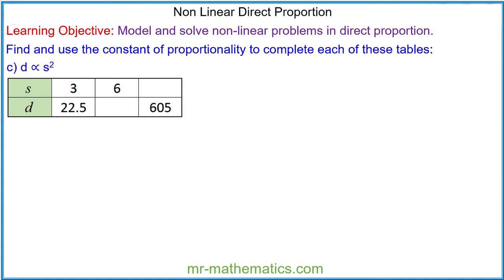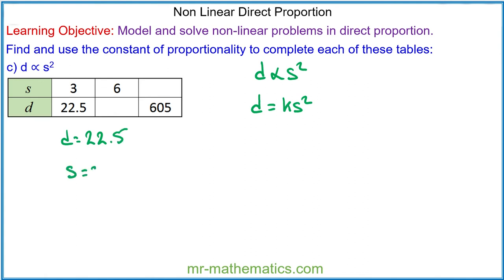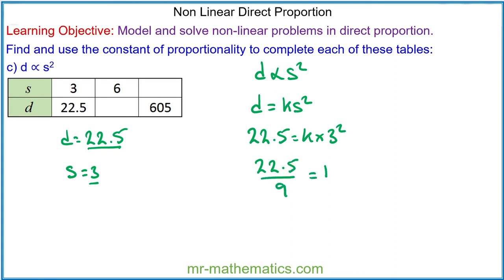Now let's try one more question. Model d is proportional to s squared and complete the table of results using your model — pause the video if you want to try it yourself. Here, d is proportional to s squared, so as an equation d is equal to k times s squared. We know when d is equal to 22.5, s is equal to 3. Substituting in, 22.5 equals k times 9, so 22.5 divided by 9 equals k, giving k equal to 2.5. So our model is d is equal to 2.5s squared.